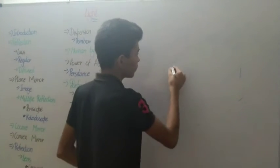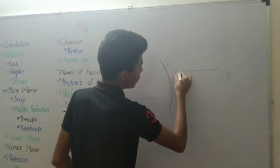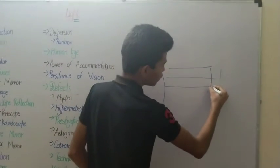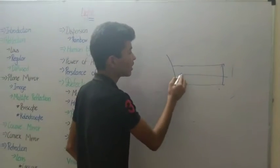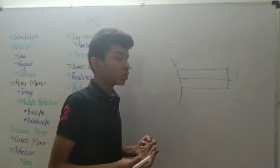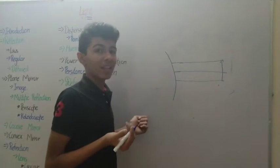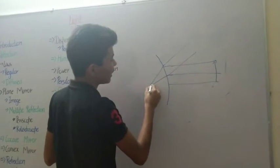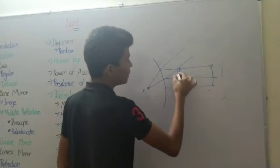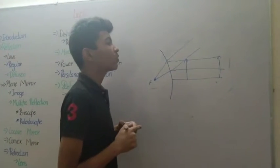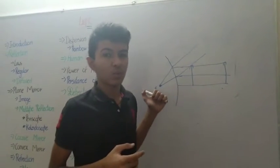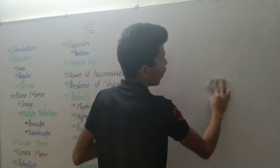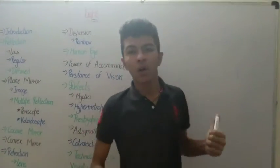Now let's look at the convex mirror. Let's place an object at various distances. All rays hitting the convex mirror diverge after reflection and never actually meet, so only virtual images are formed. Whether the object is near or far, the observer always perceives the rays as converging at the focus behind the mirror. A convex mirror always forms a virtual and erect image, regardless of the position of the object.